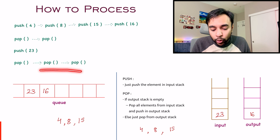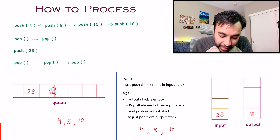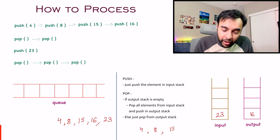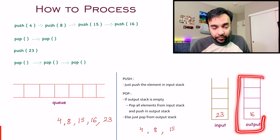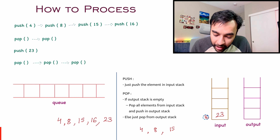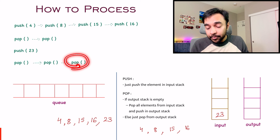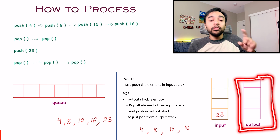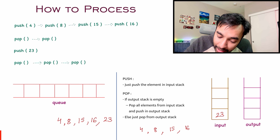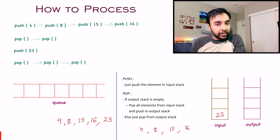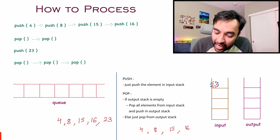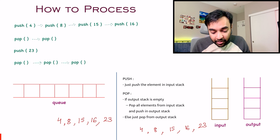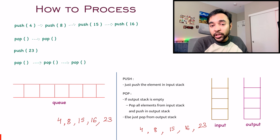Let us do two more pop operations. I do a pop and get out 16, then I pop again and get out 23. For the first pop, I look at my output stack — it has an element so I pop it out. For the next pop, my output stack is once again completely empty, so I take all the elements from the input stack and push them onto the output stack one by one. So 23 goes into my output stack and we can safely pop it out. We were able to mimic all the operations of a queue data structure using our two stacks.